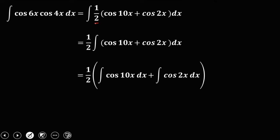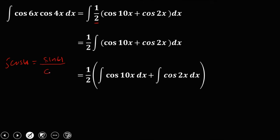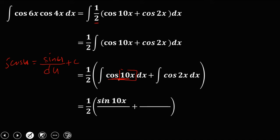To get the integral of cosine: the integral of cosine u is equal to sine u over the derivative of u, plus c. So the integral of cosine 10x — since the integral of cosine is positive sine — gives us sine 10x over the derivative of 10x, which is 10. Plus the integral of cosine 2x, that's sine 2x over the derivative of 2x, which is 2, then plus c.